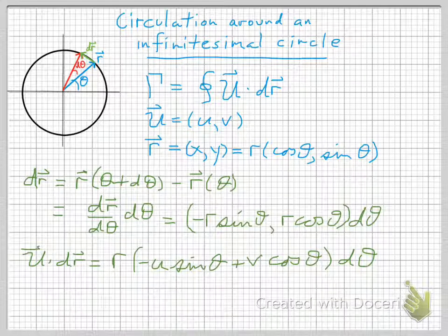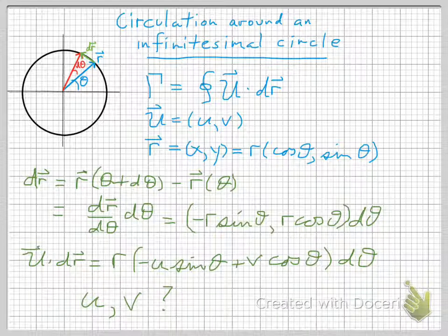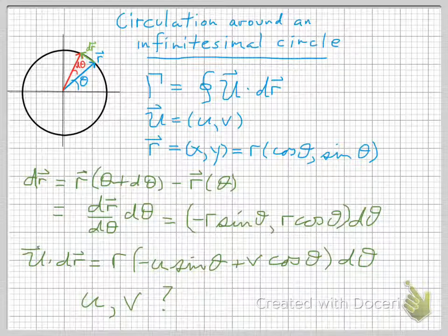Now, the next thing we need to do is to come up with a way to write u and v. We need to write these things as functions of x and y, or r and theta, or something like that, before we can do any integrating. To do that, we'll take advantage of our assumption that this is a very small circle, and use a Taylor series expansion.